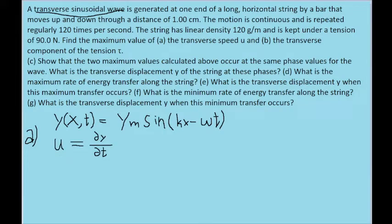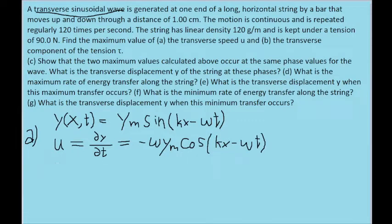I'll write u for speed and set that equal to the partial derivative of y with respect to t. Using basic calculus and the chain rule, we find this equals negative omega times y_sub_m times the cosine of kx minus omega*t. Now the problem asks for the maximum value of speed, and we have a negative at the beginning. Since the sinusoidal functions can't be greater than one, we don't need any optimization.